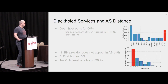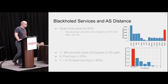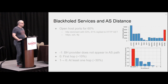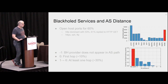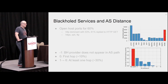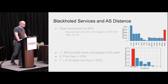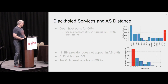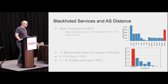Looking in more detail at the blackhole services targeted, not surprisingly HTTP accounts for mostly more than 50%, followed by HTTPS, SSH, and FTP. The researchers also looked at how far the blackhole prefix propagates. With no path, they were not able to detect the AS in the announced AS path. Zero means it was announced at an Internet Exchange Point, one means one hop away, two, and so on.